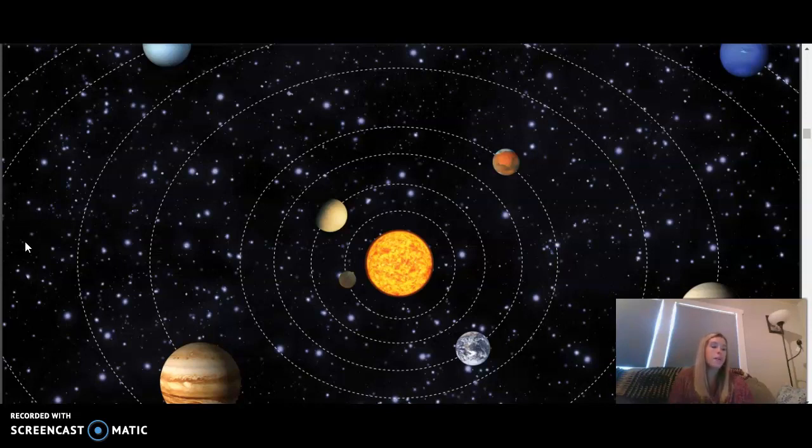Besides these eight major planets, there are also a number of smaller planets, planet-like objects, in our solar system classified as dwarf planets. Pluto is the most famous dwarf planet because it was considered to be a major planet until 2006, when astronomers discovered other small-like objects in our solar system. Many astronomers from all over the world met to discuss a new definition of what makes a planet.